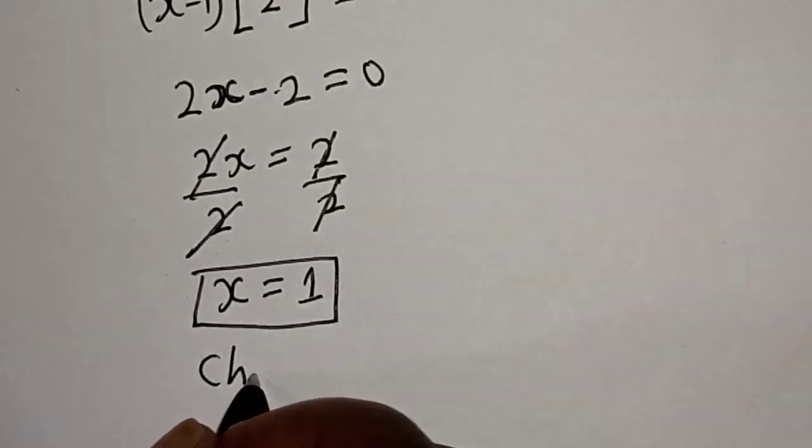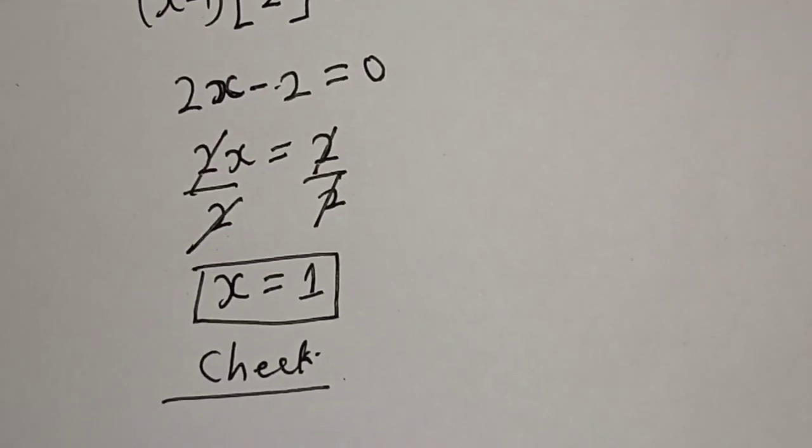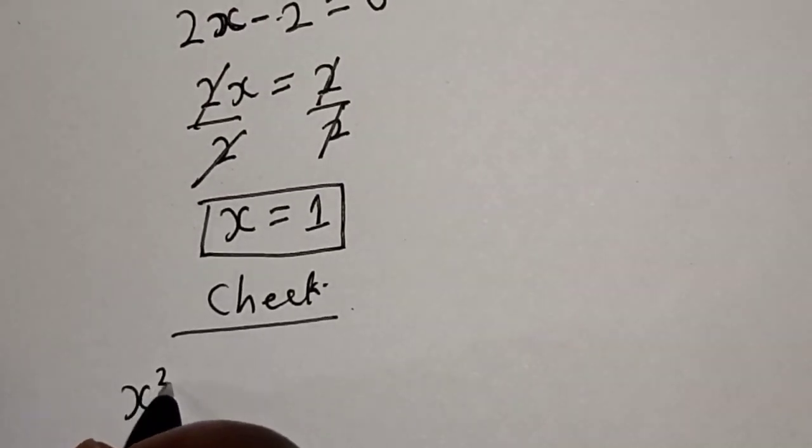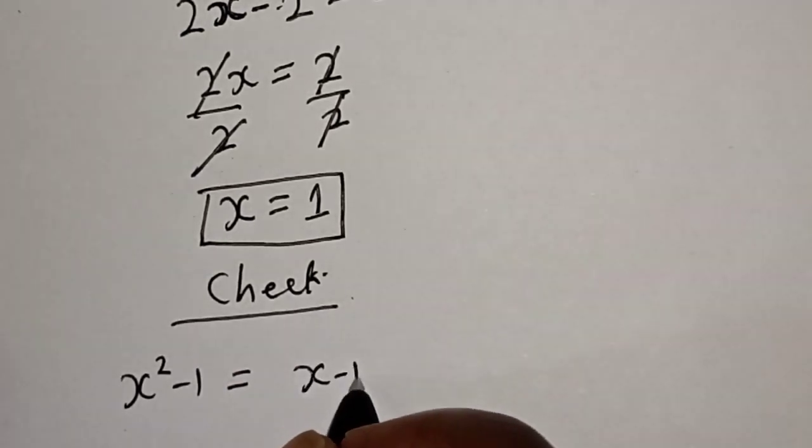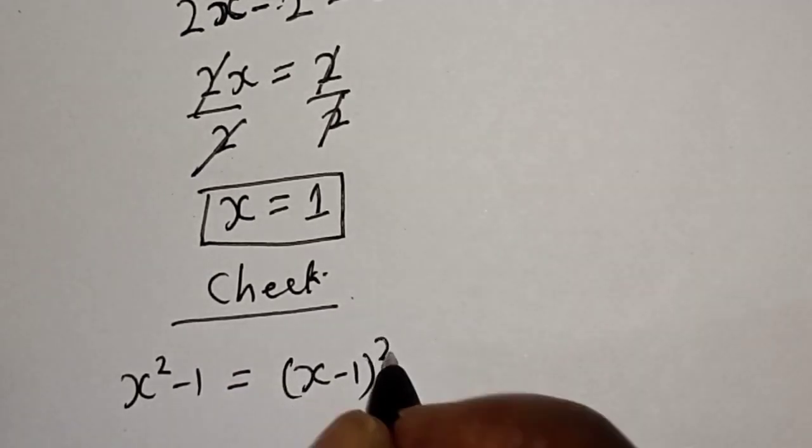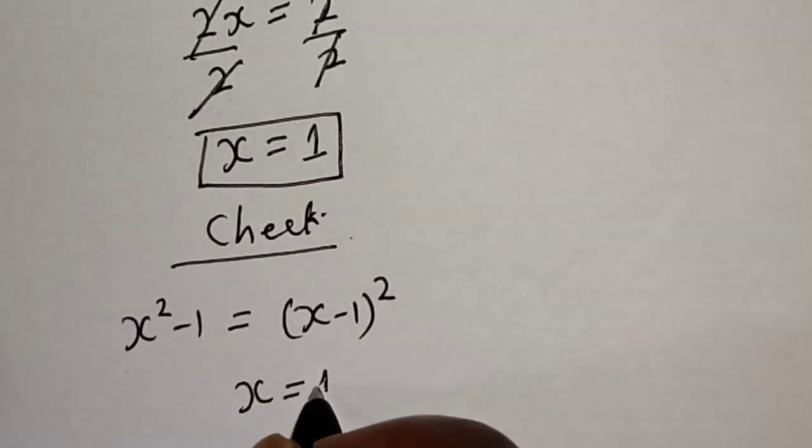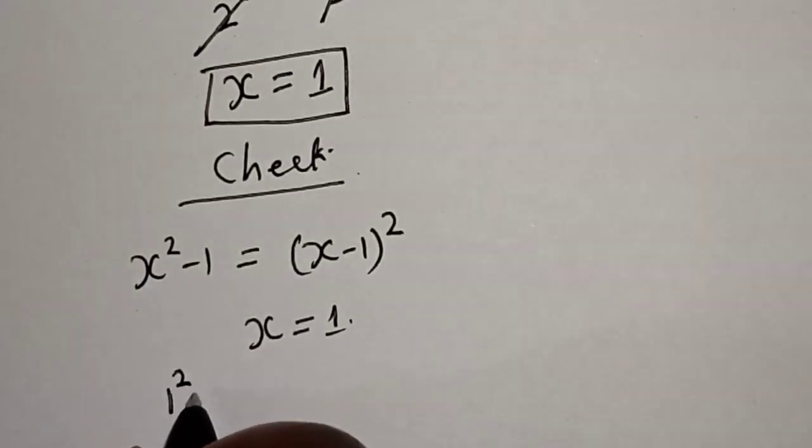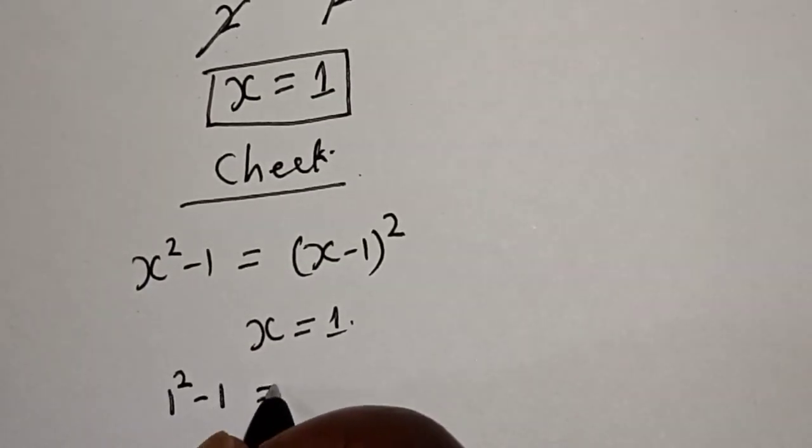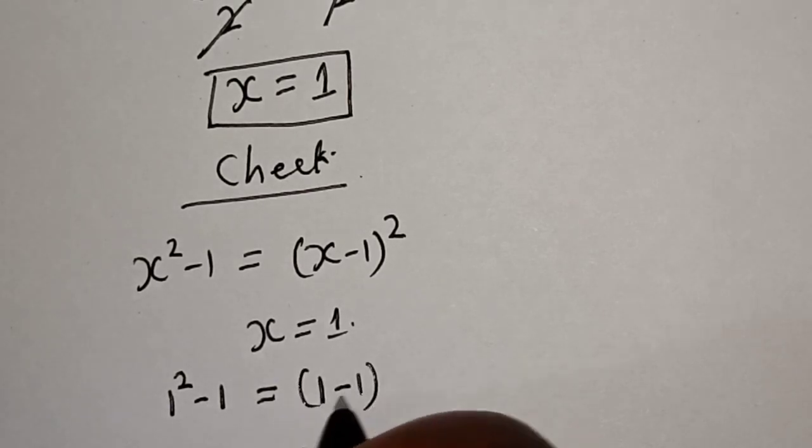Let's check. We have the given equation: x squared minus 1 is equal to (x minus 1) squared. Then at x is equal to 1, this is 1 squared minus 1 must be equal to (1 minus 1) squared.